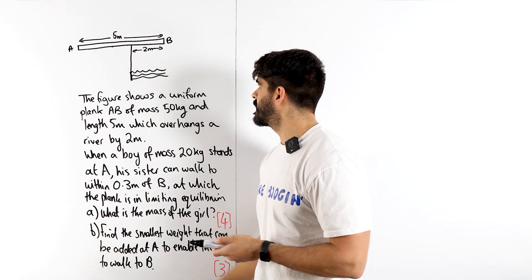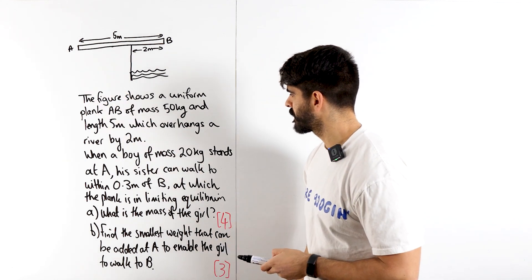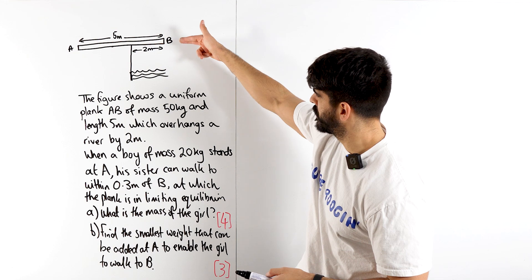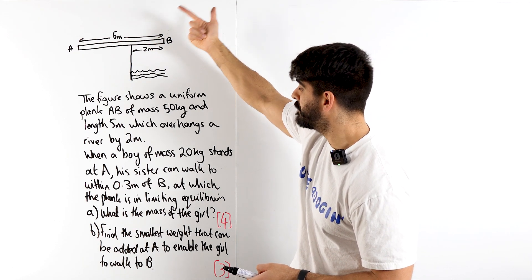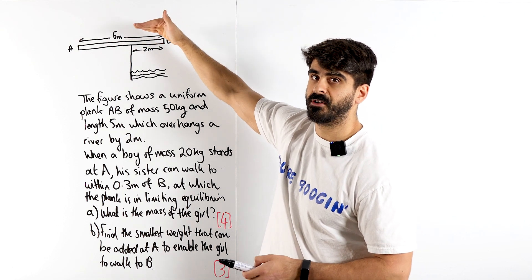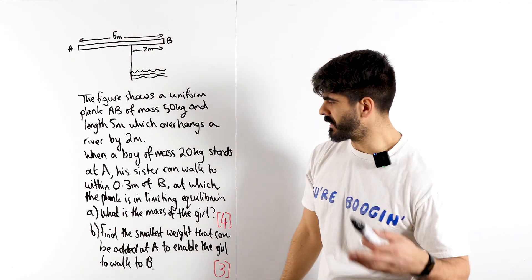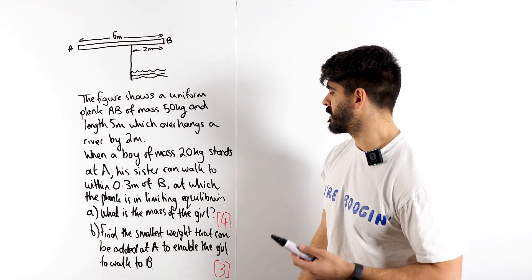When a boy of mass 20 kg stands at A, his sister can walk to within 0.3 meters of B at which the plank is in limiting equilibrium. So it's remaining horizontal. Given this information, what is the mass of the girl?